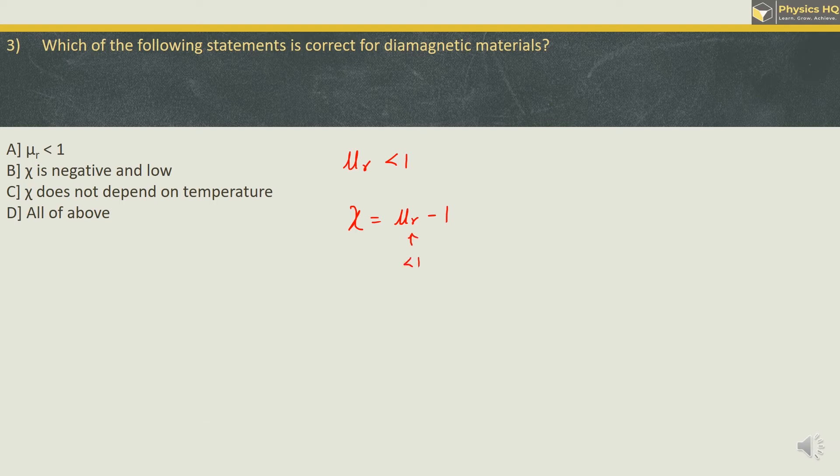And its value is low. So we have option 1 is correct, 2 is correct. And this magnetic susceptibility is almost independent of the temperature as well. So the correct option is option D, all of the above. Let us check out the next MCQ.